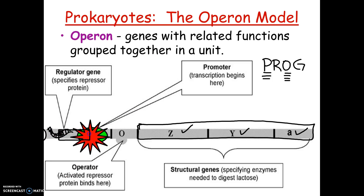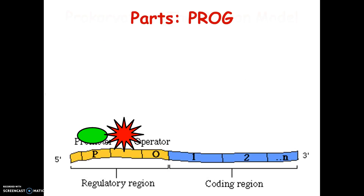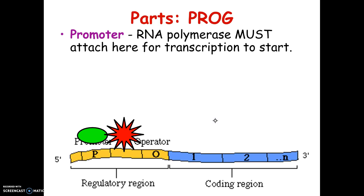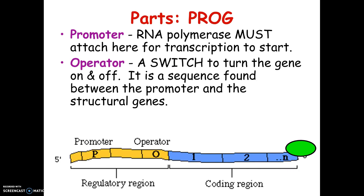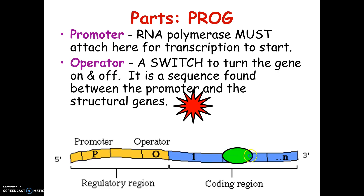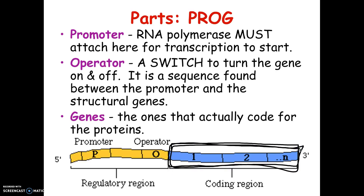The repressor protein is made by the regulator gene. The regulator gene makes the repressor protein, which can shut the operon down. So, summarizing: the promoter is where polymerase binds to start transcription; the operator is the switch — if the repressor is bound, it's off; if not blocked, it's on. Next are the structural genes — in this case three — which actually code for what the bacteria needs to make.